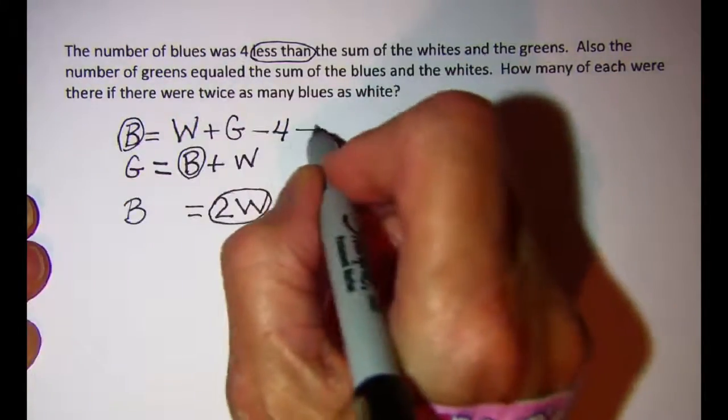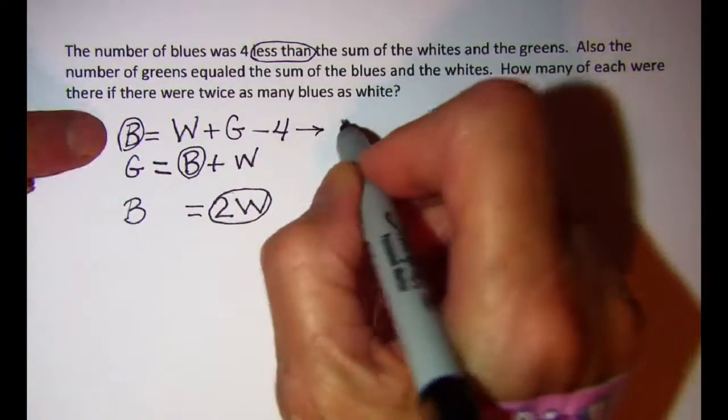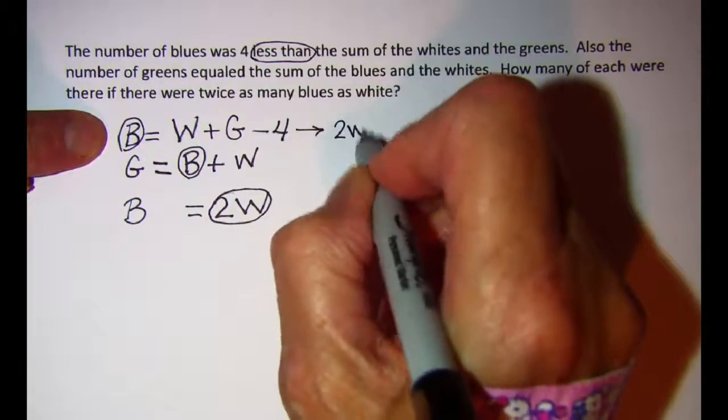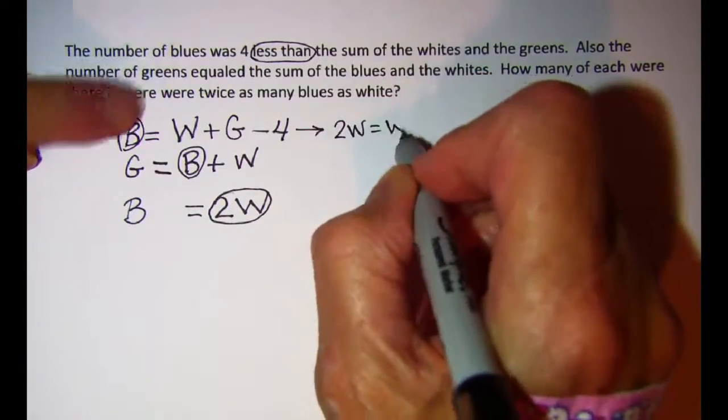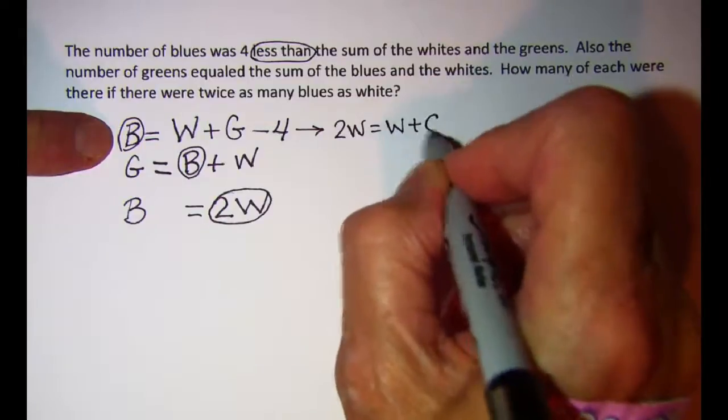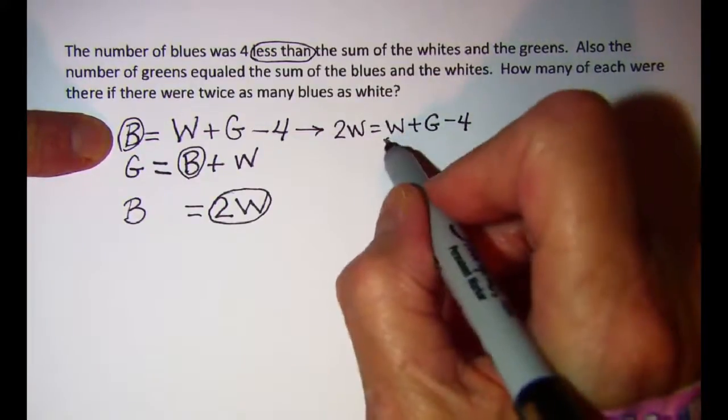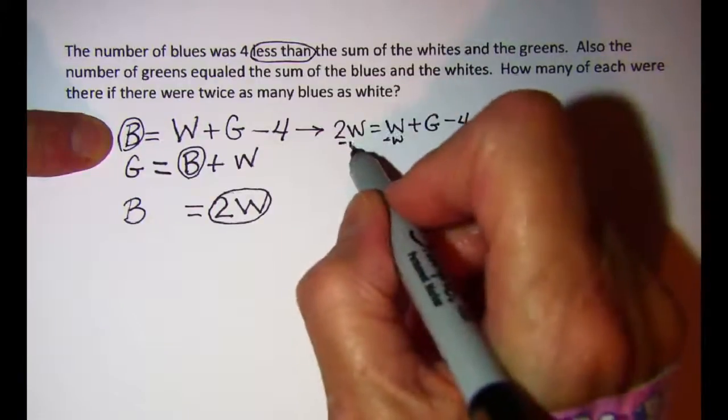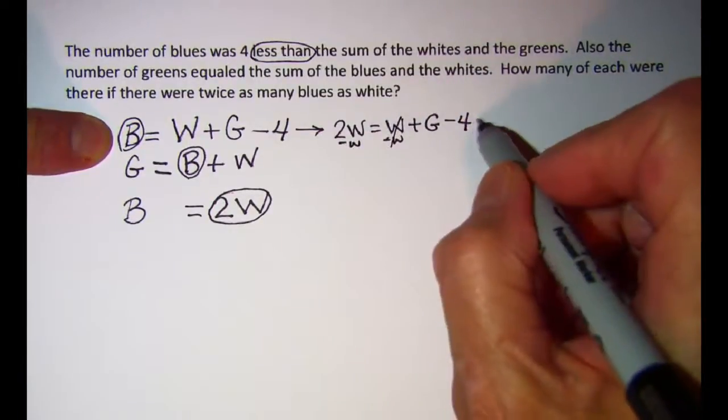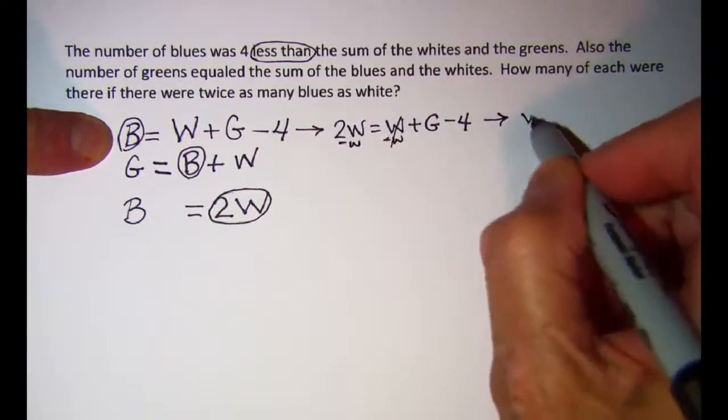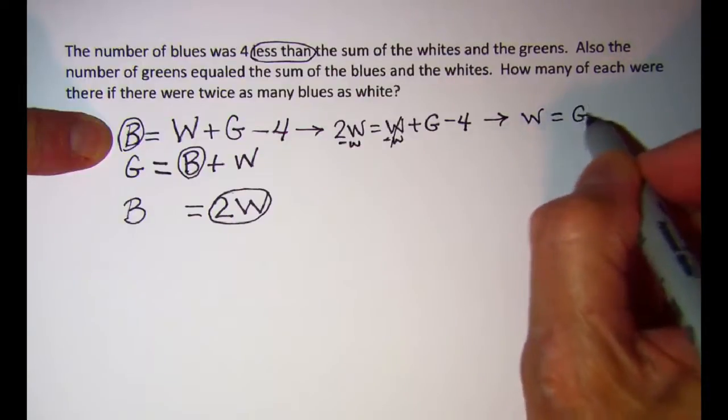So this equation will become 2W equals W plus G minus four. And then if I subtract W from both sides, I have W equals G minus 4.